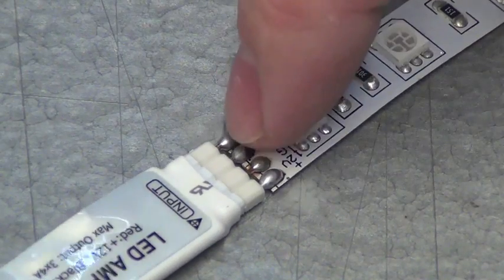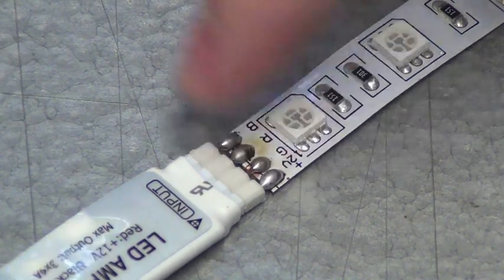We're going to go ahead and repeat this step for the output side of our LED amplifier, and then that will allow us to show you how to hook up the red and black wire.